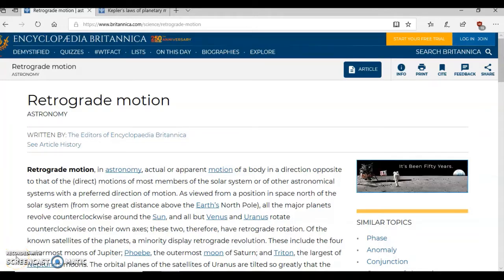The retrograde motion of the heavenly bodies prove that the earth is stationary. From Encyclopedia Britannica it says retrograde motion in astronomy actual or apparent motion of a body in a direction opposite to that of the direct motions of most members of the solar system or other astronomical systems with a preferred direction of motion.